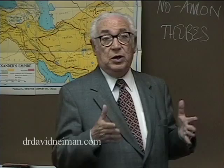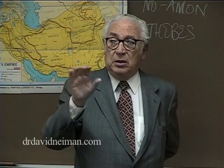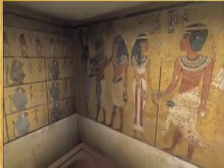On average a dynasty was about 100 years, but some lasted just a few years and some lasted 200 years. Within each dynasty we can fit certain important events. It was the fourth dynasty, around 2500 BC, when the great pyramids were built.